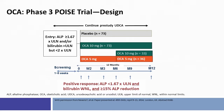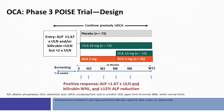Entry criteria included an alkaline phosphatase greater than 1.67 times the upper limit of normal, and/or a bilirubin greater than the upper limit of normal but less than twice the upper limit of normal. These were patients that would be classified using all of the response models as being higher risk for increased liver-related outcomes over time. Response was defined on a composite endpoint of at least a 15% reduction of alkaline phosphatase, maintaining an alkaline phosphatase less than 1.67 times the upper limit of normal, and a bilirubin less than the upper limit of normal.